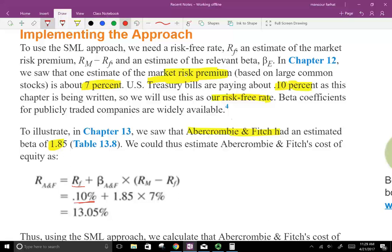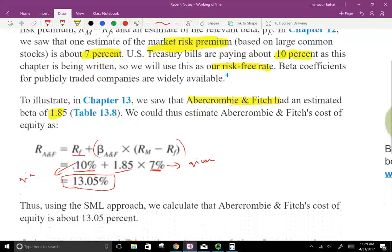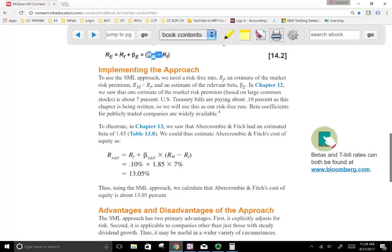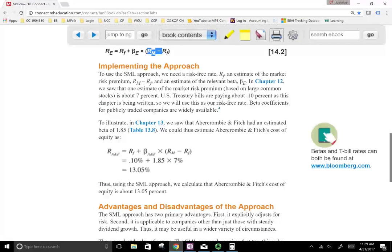So let's take a look at it. Risk-free rate is 0.1% plus the beta times the risk premium. Well, the beta is 1.85%, and we said the risk premium for large companies like Abercrombie & Fitch is 7%. This is given. So all the information is given. So basically what we find out, the expected rate of return using the SML line is 13.05%. Therefore, we say the cost of equity is 13.05%, because if the investors want to earn 13.05%, the company is expected to return to them 13.05%.